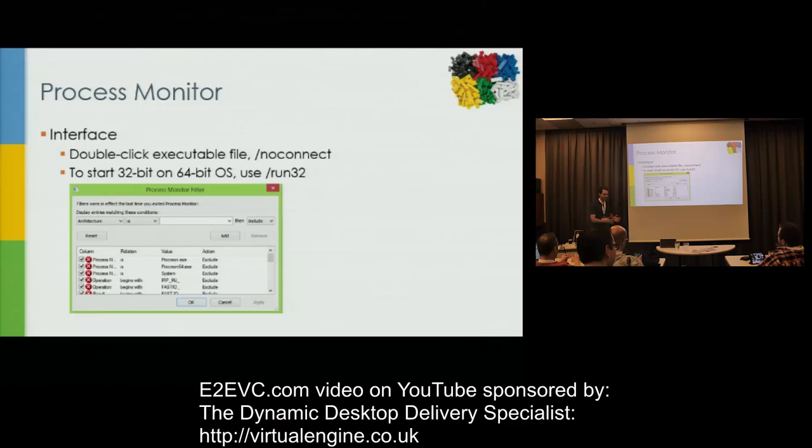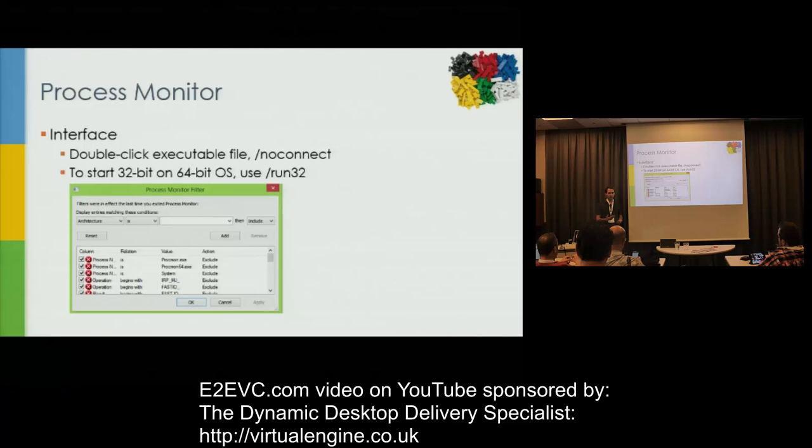So, you double-click an executable file, and that's how you start troubleshooting. We'll talk about the tool first and get into the troubleshooting part a bit later. First of all, it's very lightweight and executable. You get it off Sysinternals, which is now on the Microsoft site.